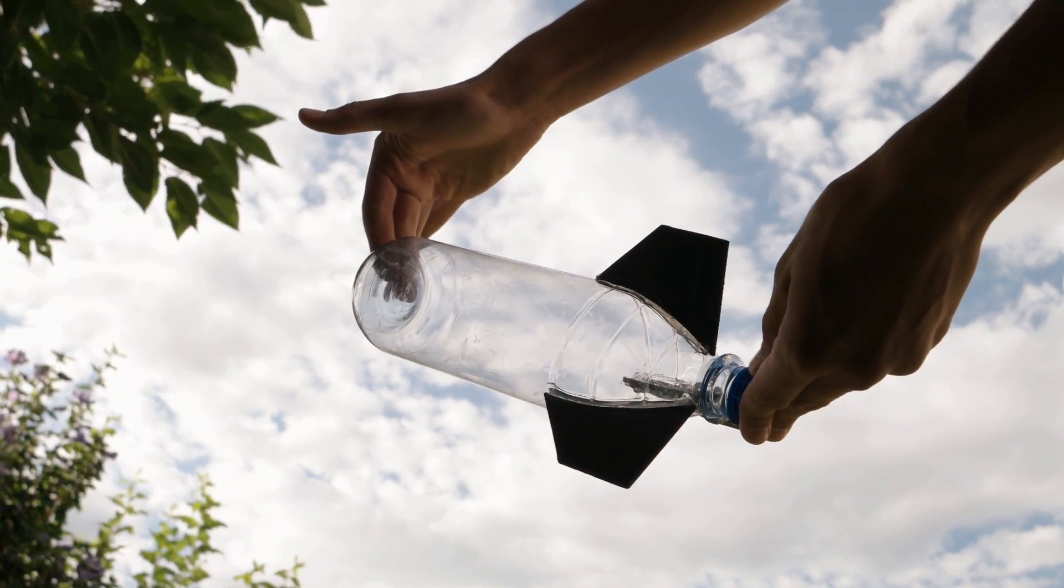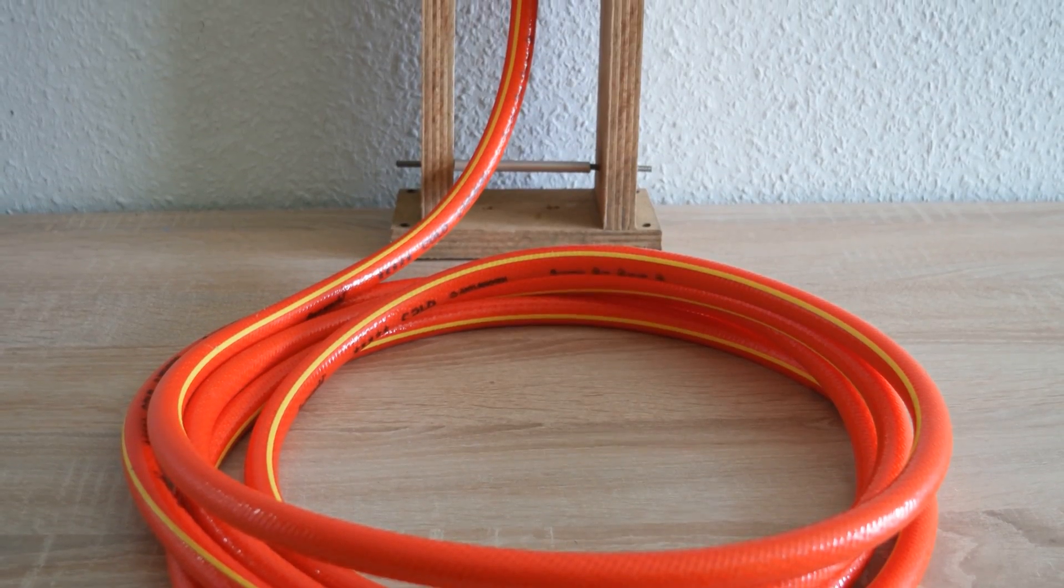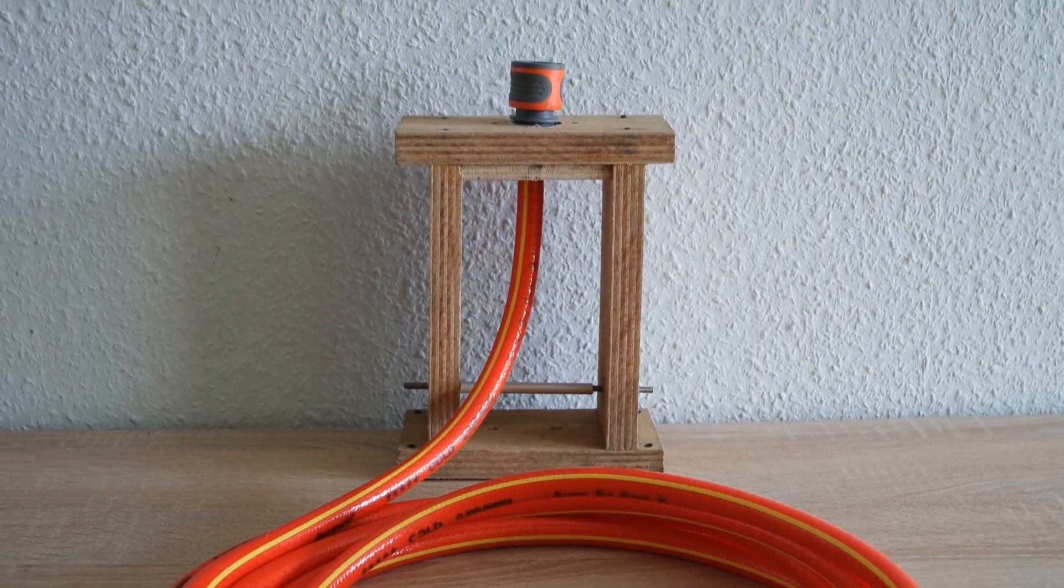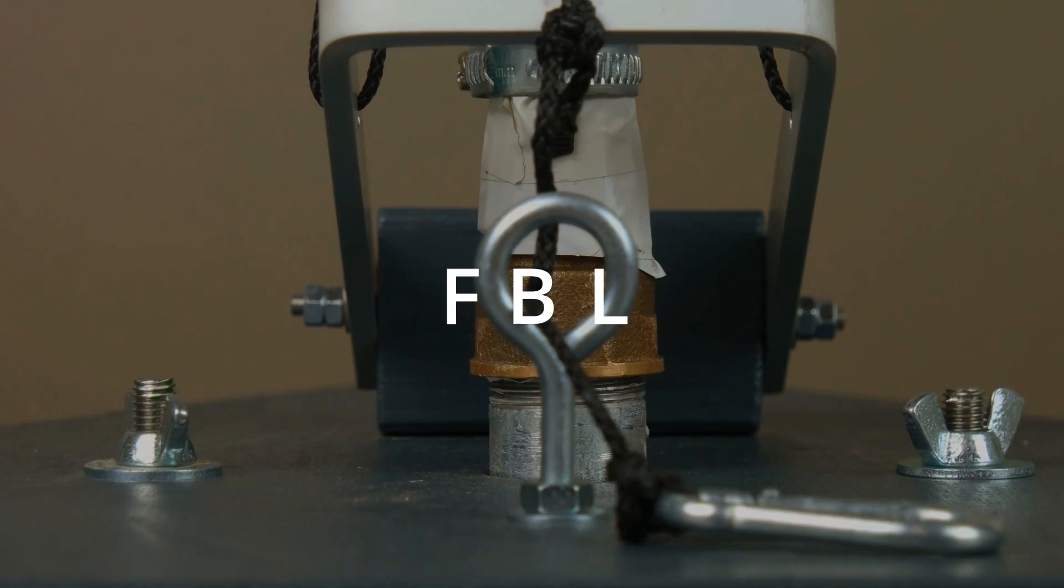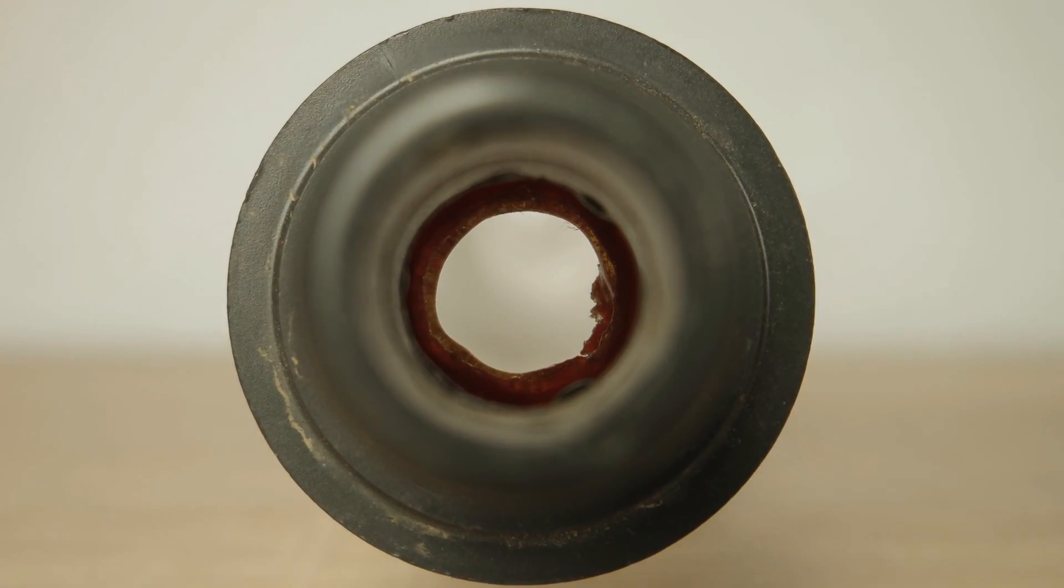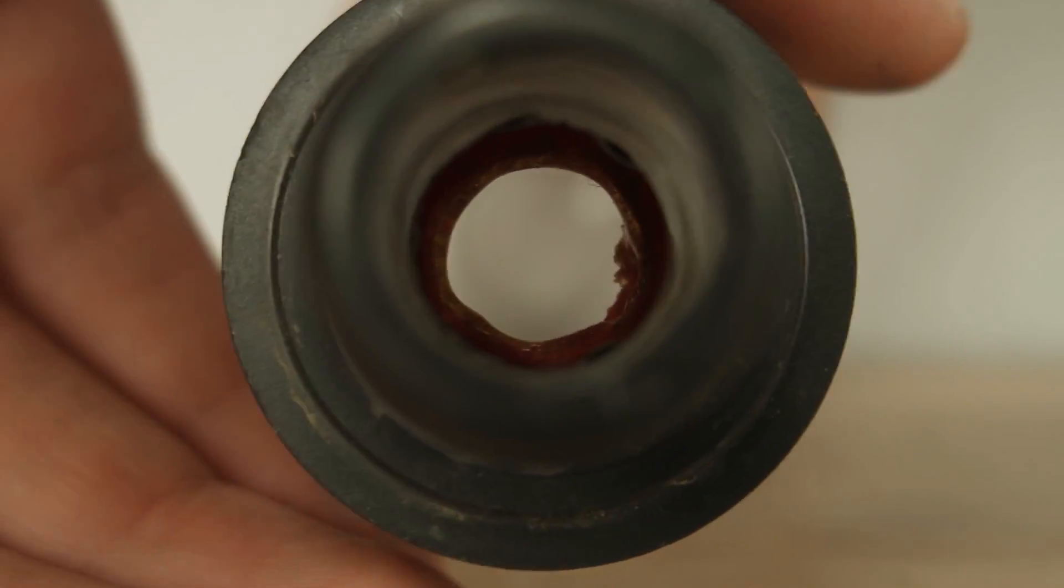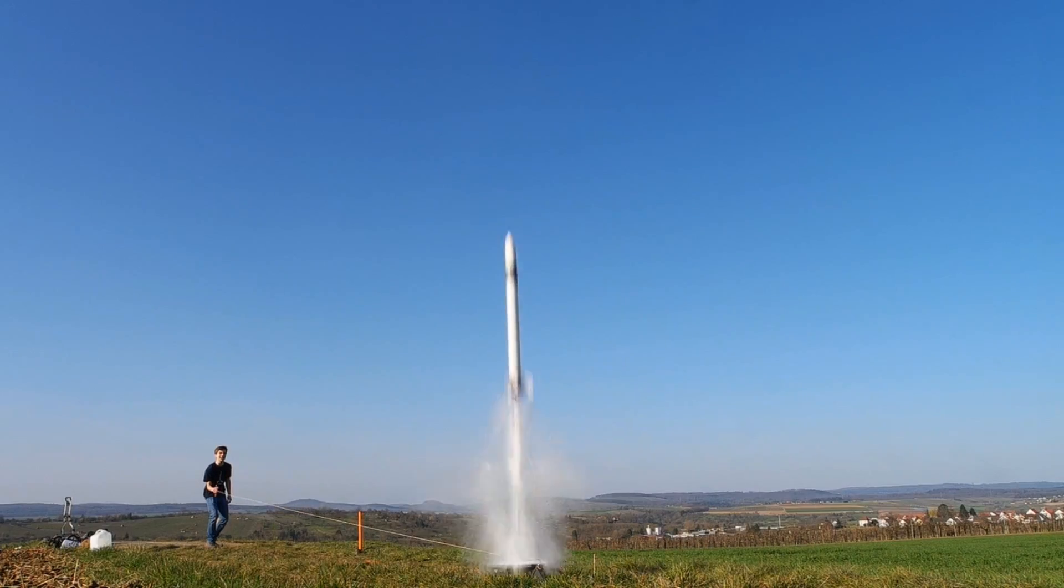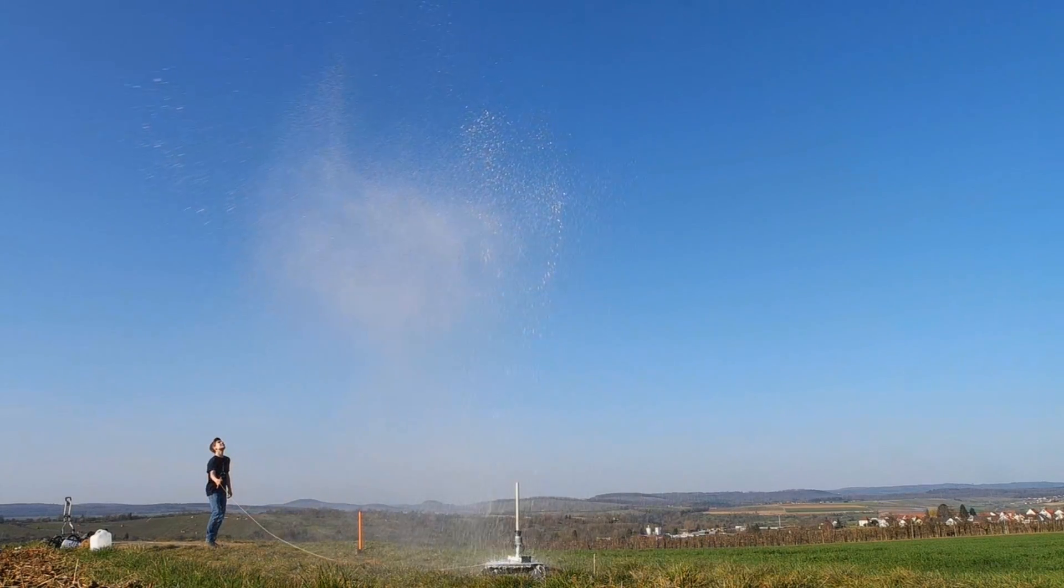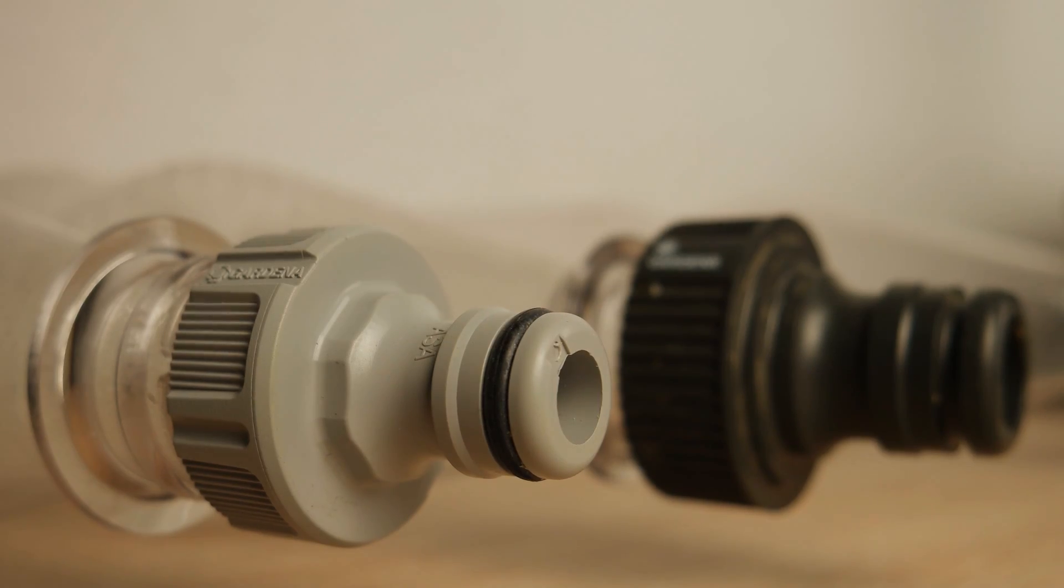While smaller water rockets often use a launch system based on garden hose components, we want to show you the construction of a full bore launcher in this video. The advantage of our FBL is that the entire opening of the pressure vessel can be used to push the water out of the rocket as quickly as possible, while other systems often require smaller openings.